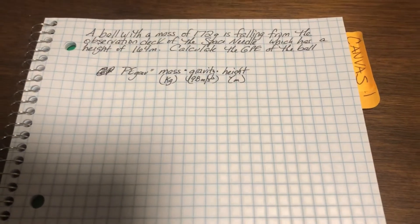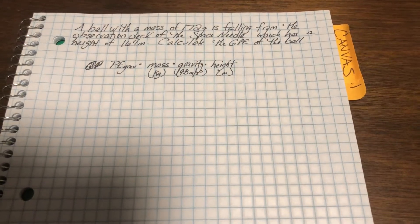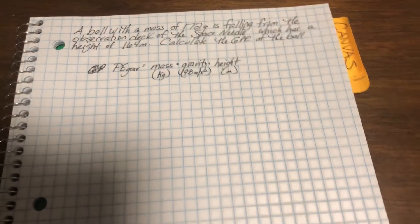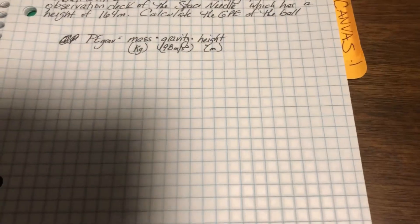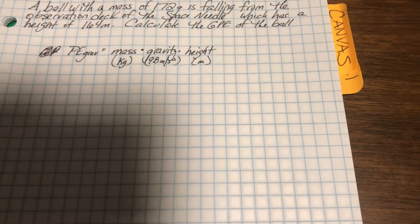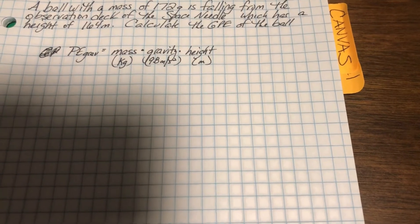Okay, so Thursday, Friday's exit ticket, I asked you to calculate the GPE of a ball falling from the Space Needle, and I gave you the formula. Potential energy due to gravity equals mass times gravity times height. I gave you the units of measure to help you work through this problem.